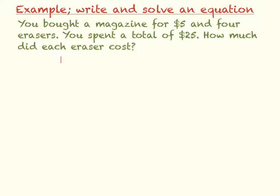So, you spent a total. The total is going to equal something, and it's going to equal the magazine, plus the four erasers. So the total is twenty-five dollars. The magazine cost you five dollars,